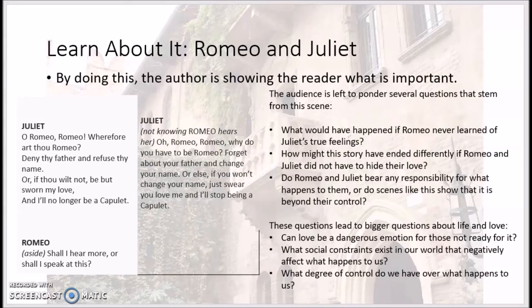All of this is to say that when the author is implementing irony, the author is really showing the reader what is important. When we see this scene, we think of several questions: What might have happened if Romeo never learned of Juliet's true feelings? How might the story have ended differently if they did not have to hide their love? Do Romeo and Juliet bear any responsibility for what happens to them, or does this show that what happens to them is beyond their control? These questions about the story lead us to bigger questions about life and love in general — can love be a dangerous emotion for those not ready for it, what social constraints exist in our world that negatively affect us, and what degree of control do we have over what happens to us?